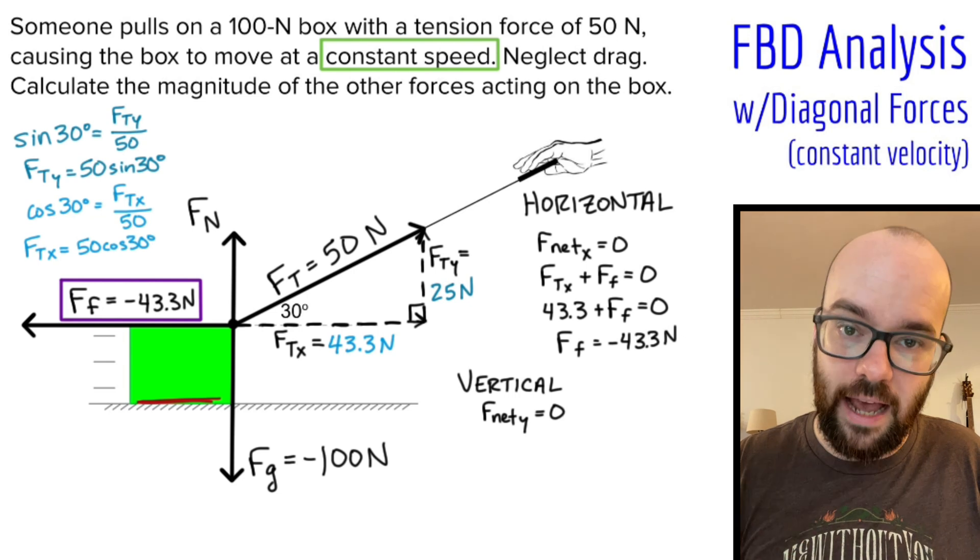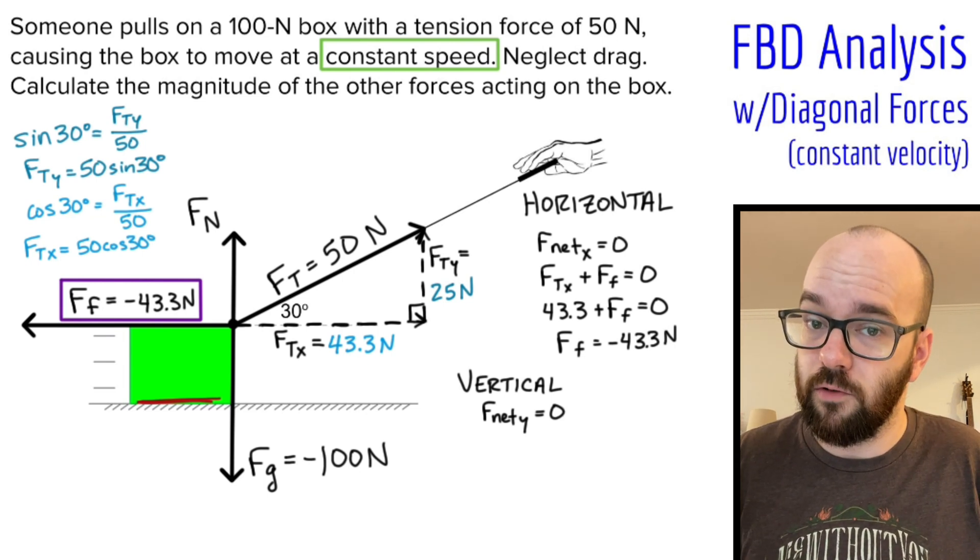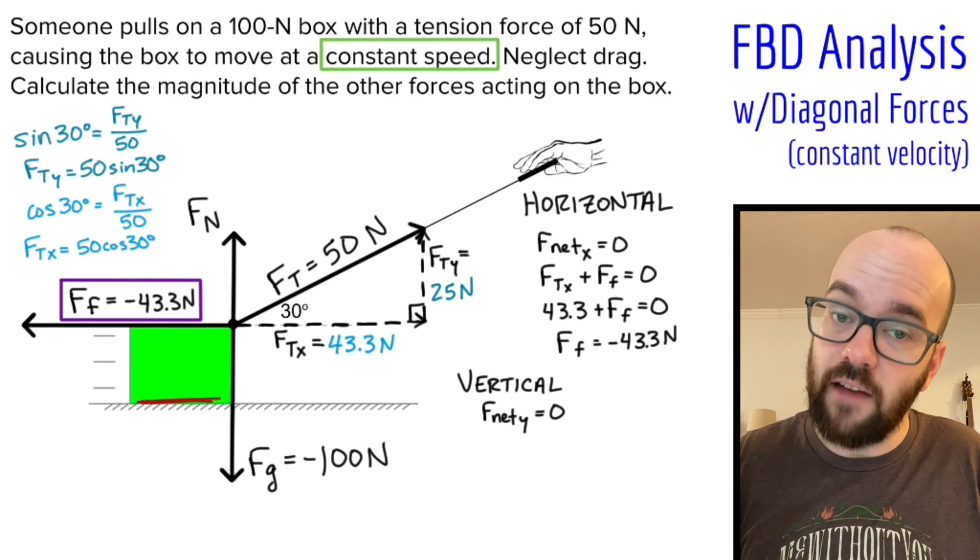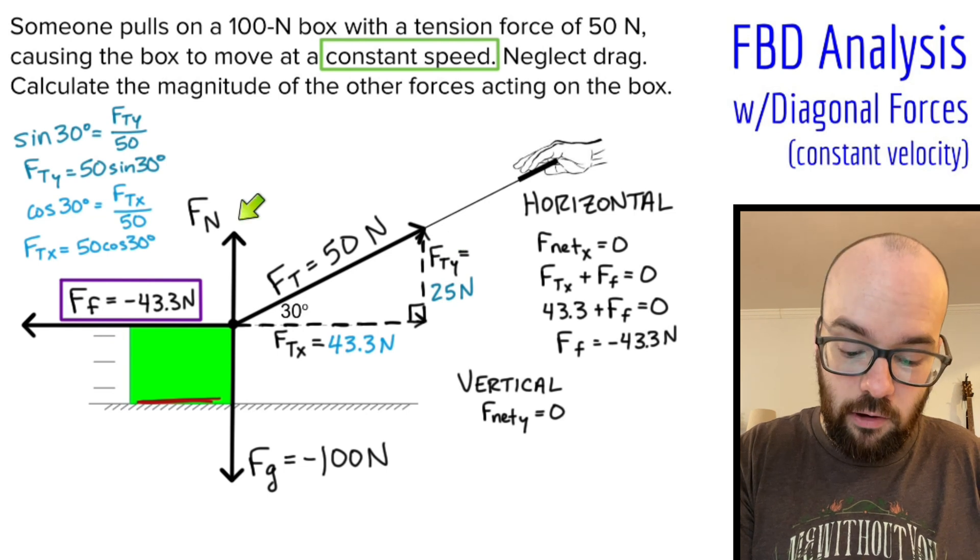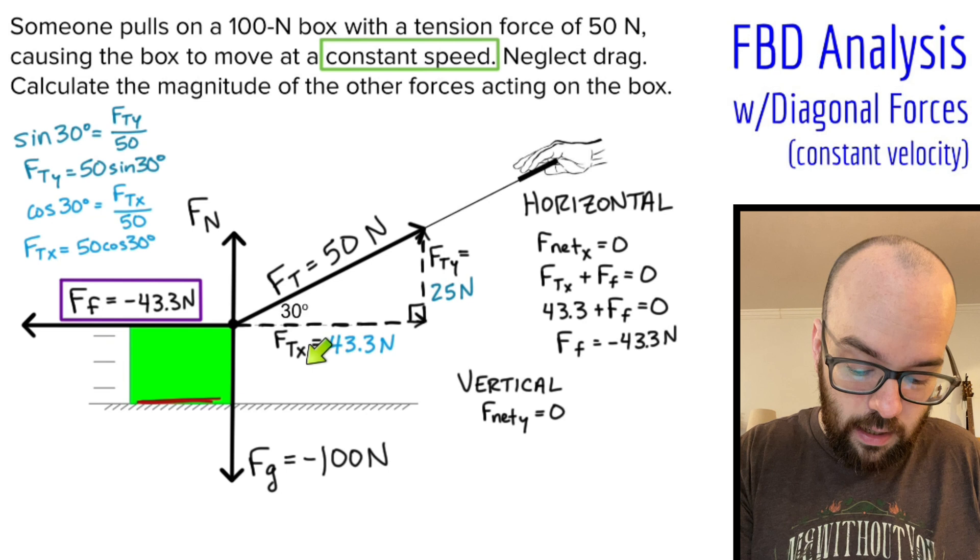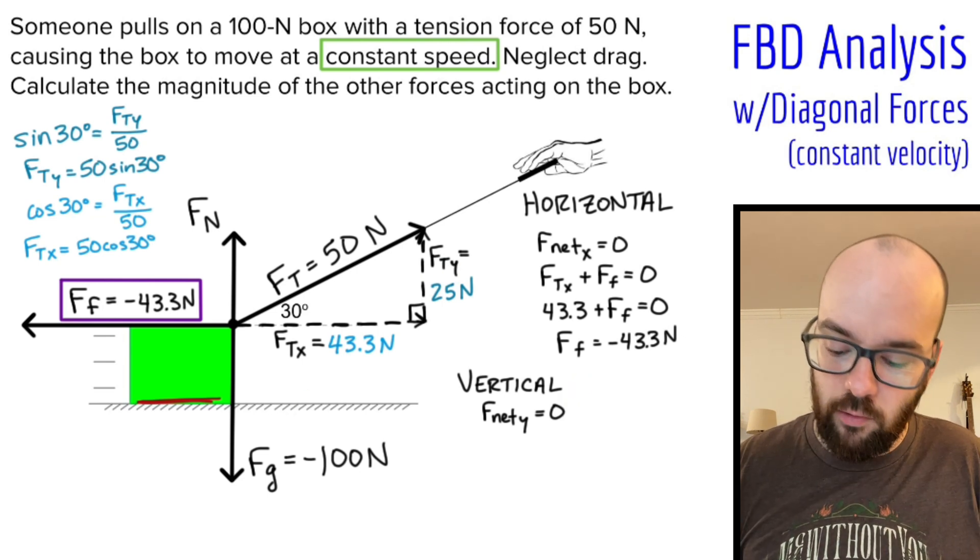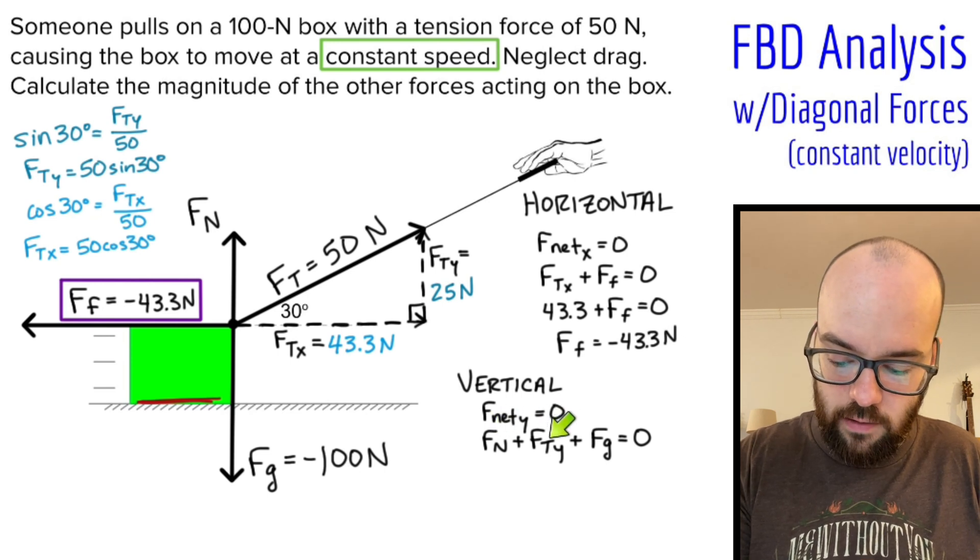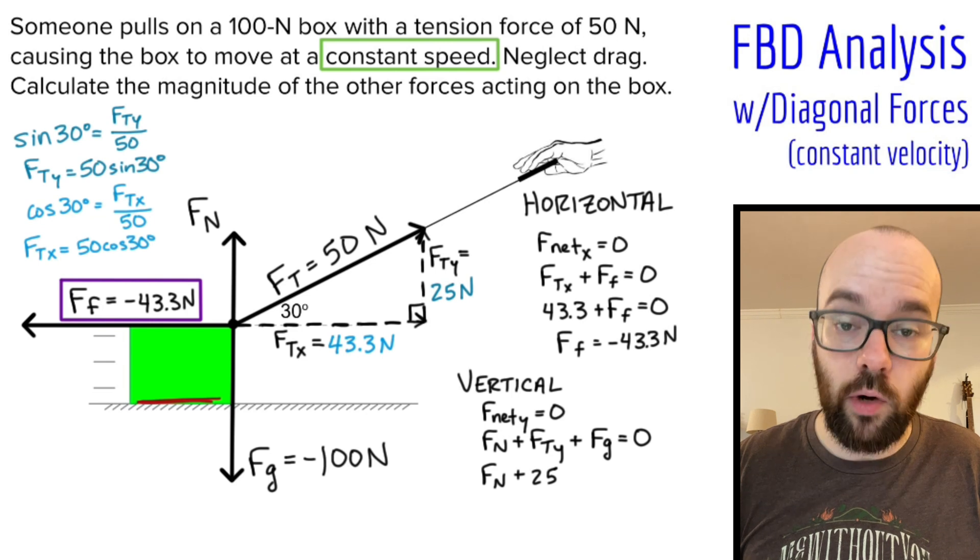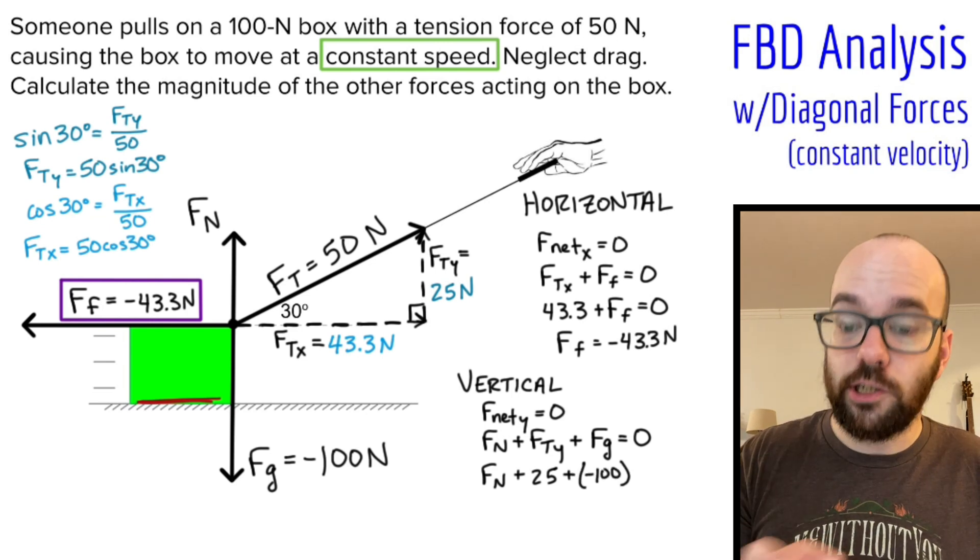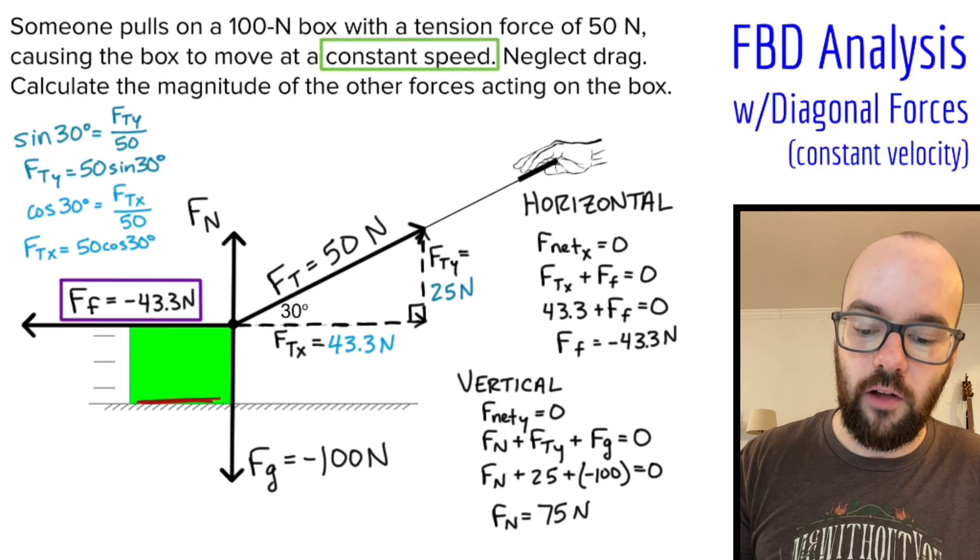So what vertical forces do I have? Well, there's normal and gravity. A common misconception that students make is that the normal force has to be equal to the gravitational force because often it is in many problems. But it doesn't have to be. And in this case, it's not. Don't forget about the vertical component of the tension force. So the normal force plus the FTY, the vertical component of the tension, have to add up to balance out the force of gravity. I'm going to write it out. Normal force plus FTY plus the force of gravity add up to be zero. Normal force I don't know yet. FTY was 25 newtons, and force of gravity is negative 100 newtons. Those three forces add up to zero. 25 plus negative 100 is negative 75. Add 75 on both sides, and I get a normal force of 75 newtons.